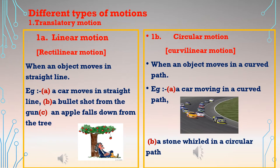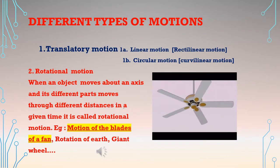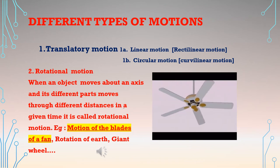When an object moves in a curved path, it is called circular motion or curvilinear motion. Examples include a car moving in a curved path or a stone tied at the end of a string whirled in a circular path. The first type of motion — translatory — can thus be either linear motion or circular motion.